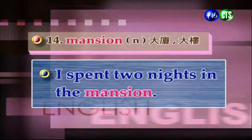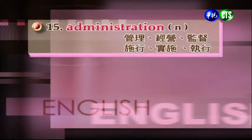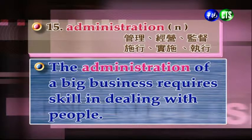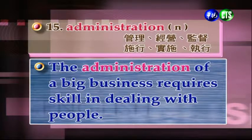下面這個單字是Mansion。Mansion，名詞，大廈、大樓。例句：I spent two nights in the mansion. 我在那個大廈住了兩個晚上。我們看最後一個單字：Administration。Administration，名詞，管理、經營、監督、實行、實施、執行。例句：The administration of a big business requires skill in dealing with people. 管理一個大企業需要和人們相處的技巧。Deal with有相處應付的意思。以上是本課的單字，我們休息一下，等會再來看本課的課文內容。